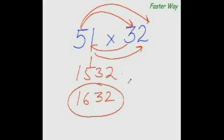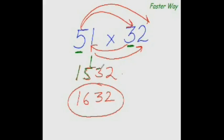Let me explain it to you in more detail. All I have done is multiply the first digit of this number — the most significant digit — with the first digit of this number. So 5 times 3 is 15, and I have written 15 here. Then I multiply the first digit again with the other digit of this number. So 5 times 2 is 10. But before I put down 10, I added to it the product of the first digit of the second number and the second digit of the first number. So 3 times 1 is 3, and 10 plus 3 is 13. So I put 13 here.